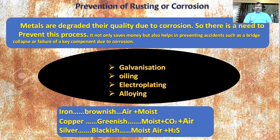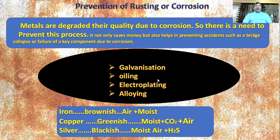Iron oxide forms on the surface of iron and is brittle, so it causes decay. Zinc also forms an oxide, but it is very tightly bonded to the metal surface. In this way we can stop rusting by galvanization or electroplating. Applying a coat of oil stops oxygen from coming into contact with the metal surface, preventing oxidation.